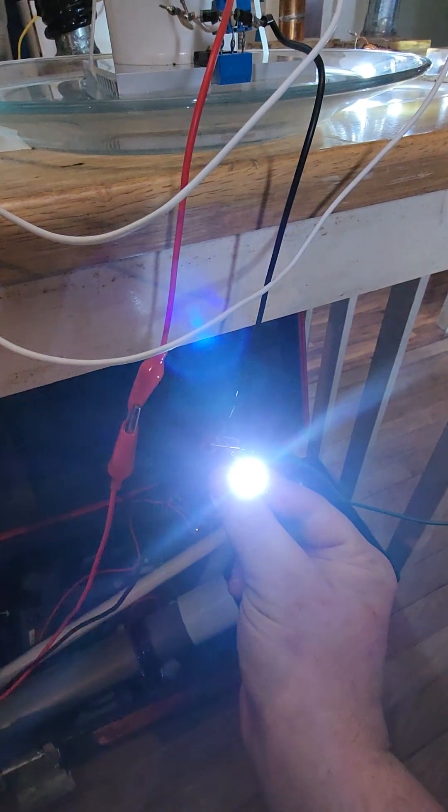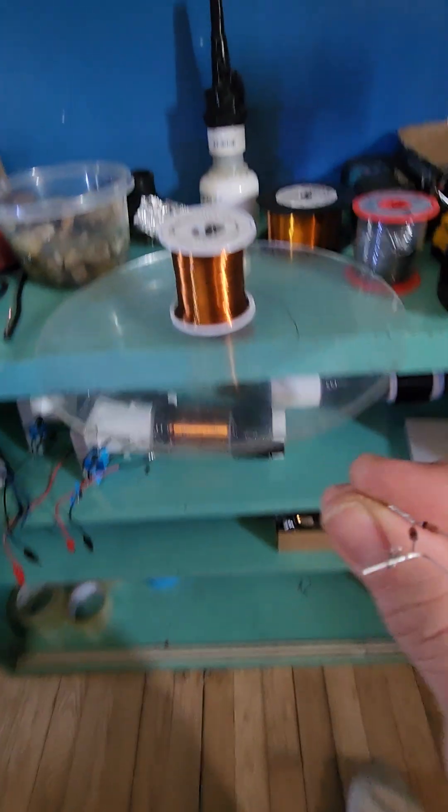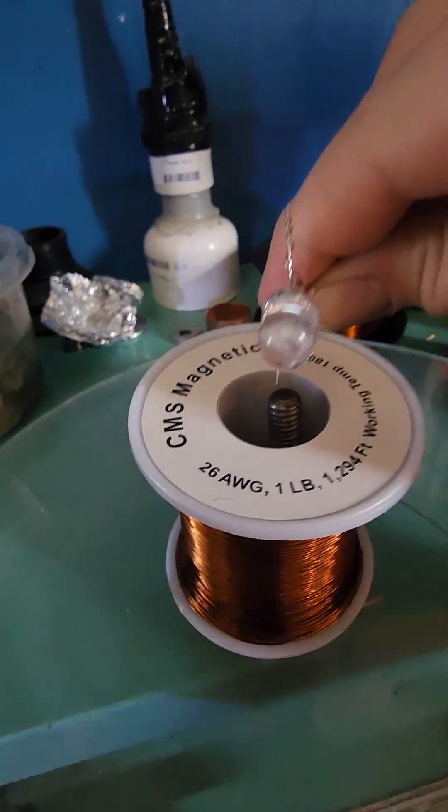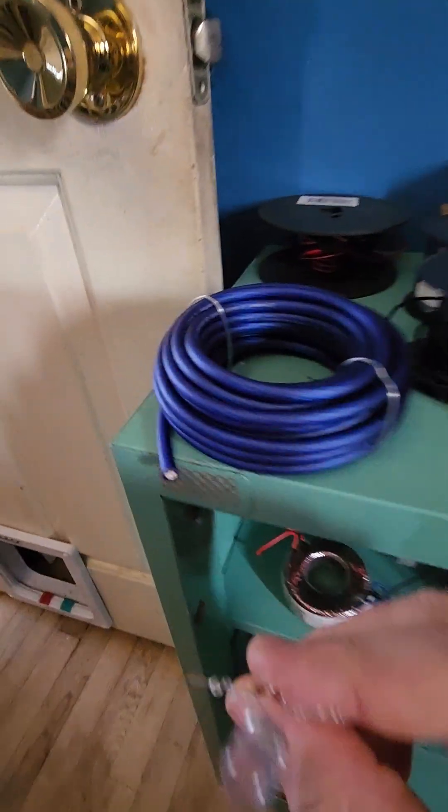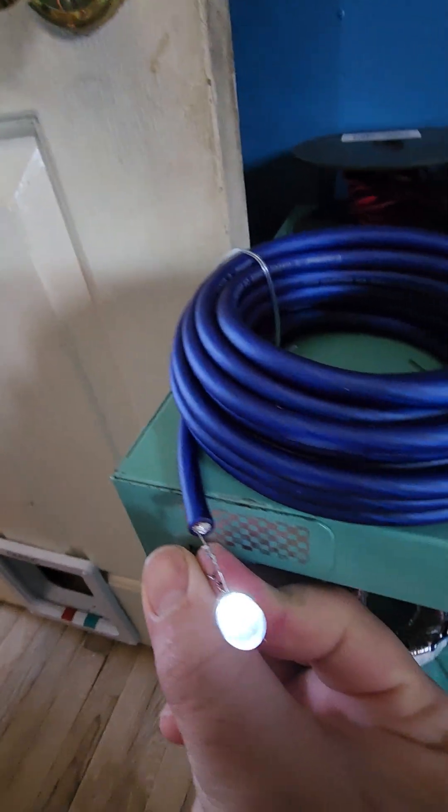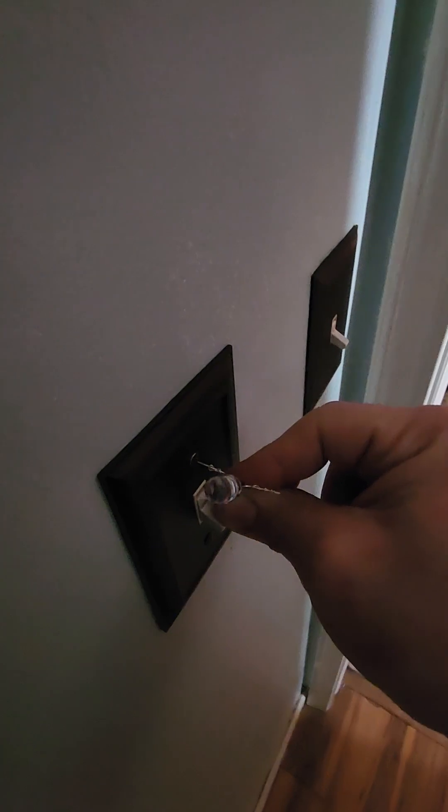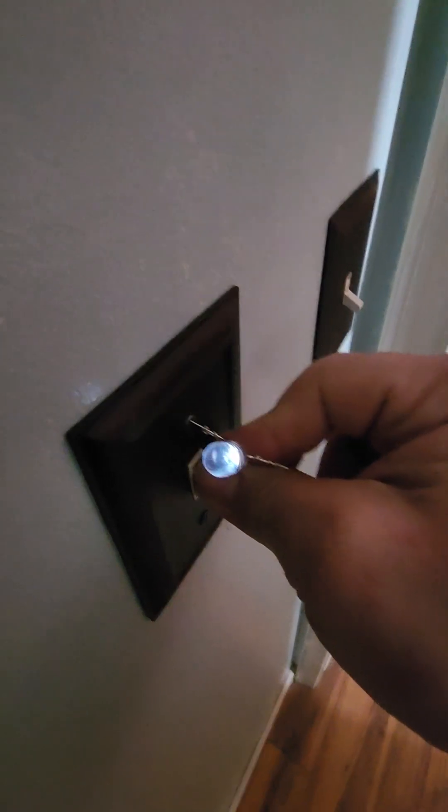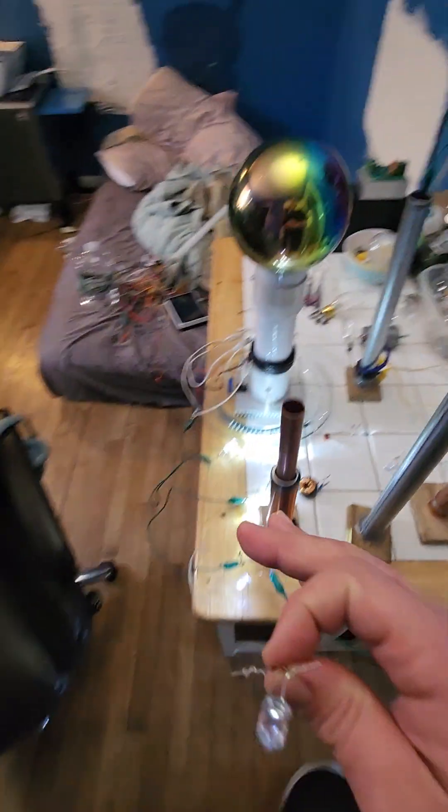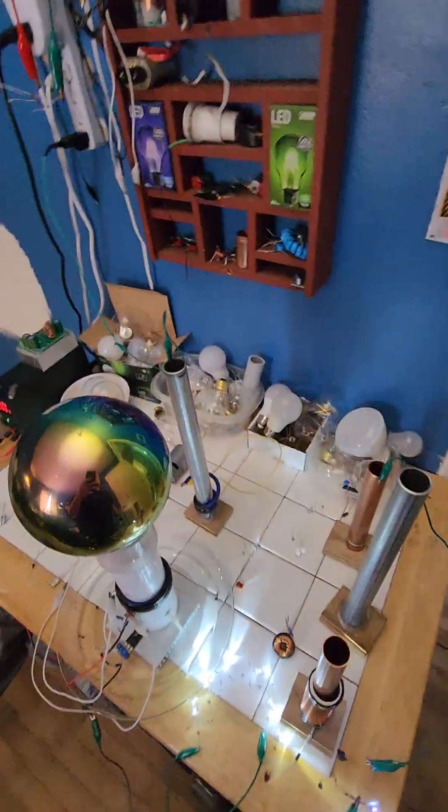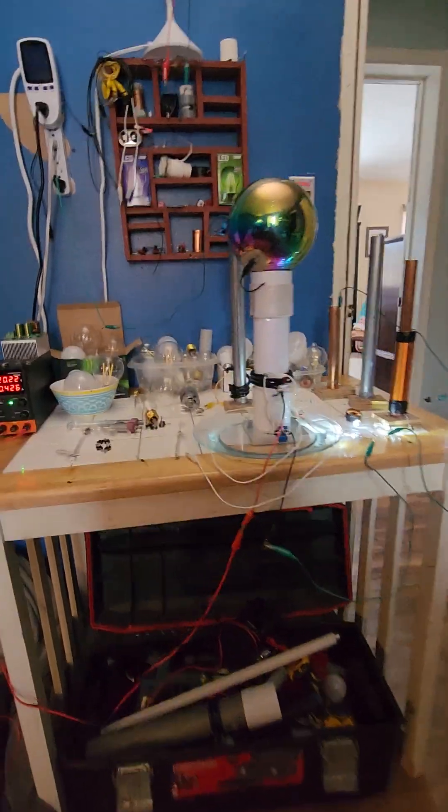I can take these little mini receiver lights, touch them to anything grounded, they still light up. This is the radiant energy effect. Touch it to metal, it lights up. Touch it to just stray wire, it lights up. Doing this doesn't place a drain on the transmitter. Touch it here, it lights up. Touch it here, it lights up.